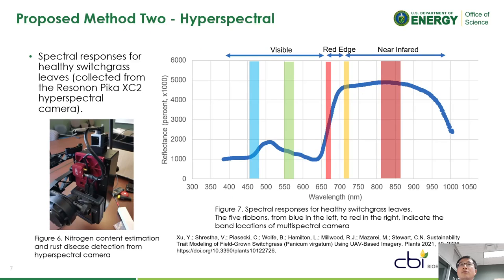Proposed method two is to include hyperspectral imagery into the nitrogen content modeling. We have in our previous study demonstrated the spectral responses for healthy switchgrass. The analysis based on hyperspectral imagery and machine learning are ongoing.